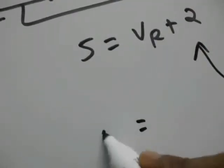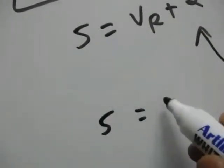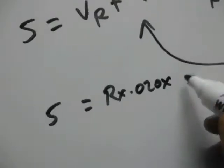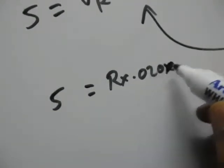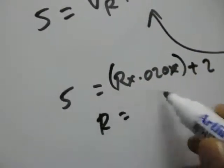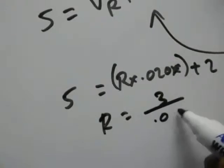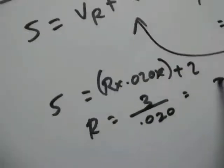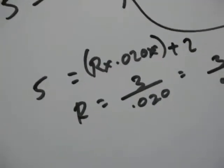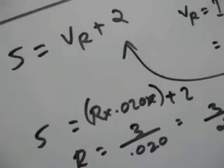So it will be like 5 is equal to R into 0.020 plus 2. So R is equal to 3 by 0.020, is equal to 3 by 2 into 10 raised to 2, is equal to 150 ohms.